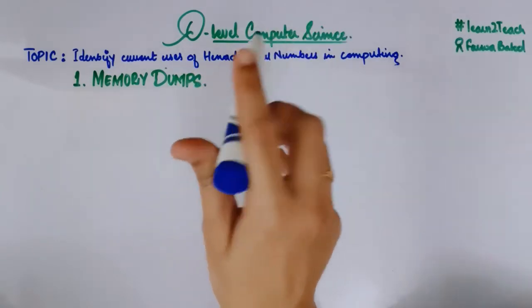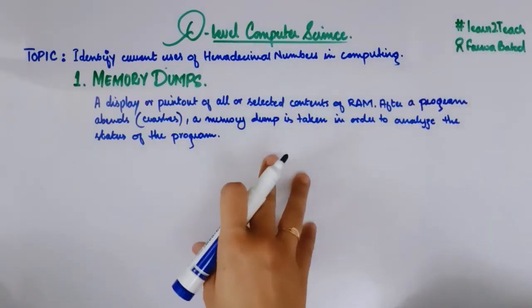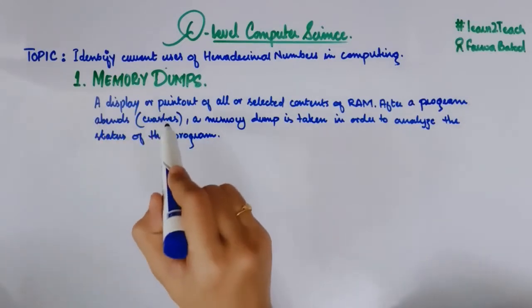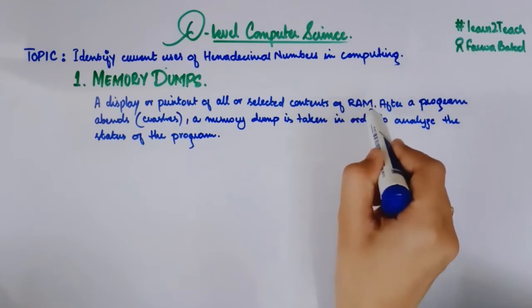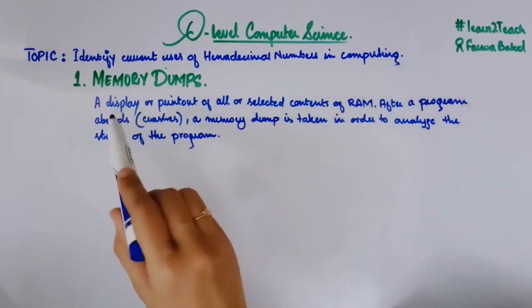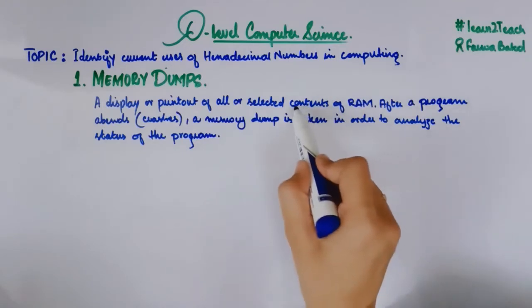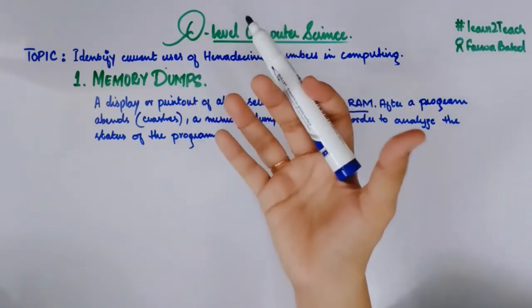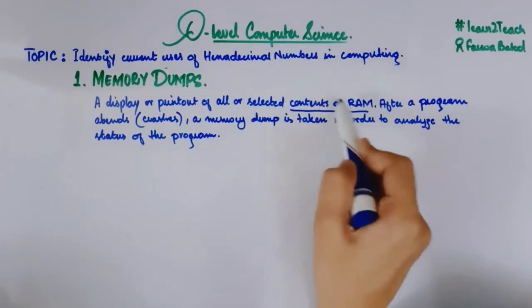What are memory dumps? Let me share the definition first. Here is the definition of a memory dump: a display or printout of all or selected contents of RAM. What is RAM? RAM is random access memory. It's a kind of memory. So what it is saying is a display or a printout of all or selected content of RAM. Basically it's content that is being stored inside a memory.